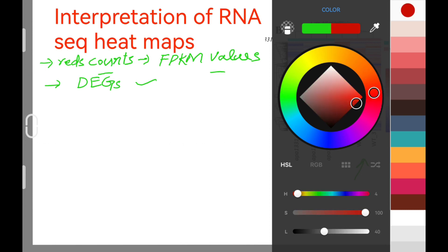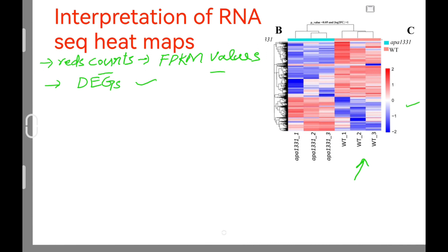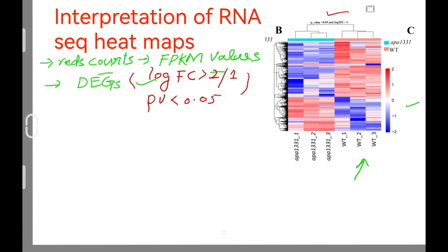The heat map here was also generated from DEGs values. For DEGs in RNA-seq data there are two criteria: number one is log FC value, and number two is p-value. Usually we take log FC value greater than two, but sometimes greater than one. The p-value is usually taken as less than 0.05. This heat map was generated at these two criteria: p-value of 0.05 and log FC greater than one.